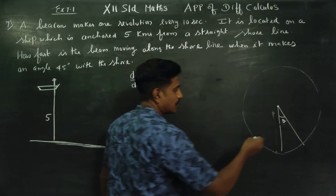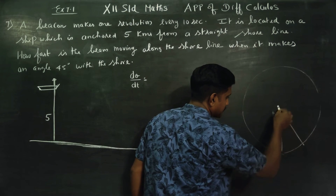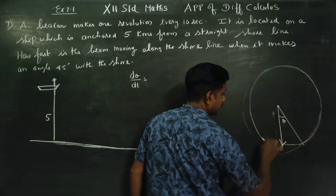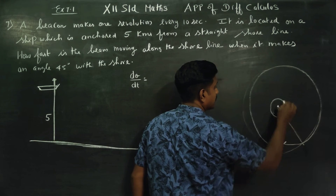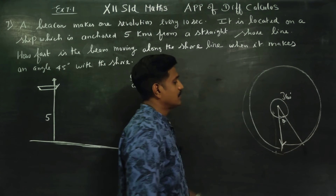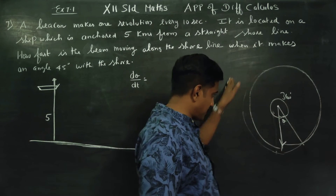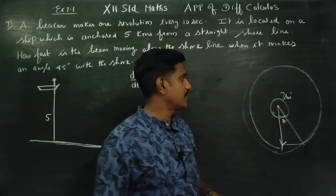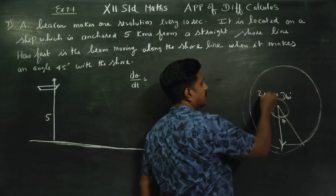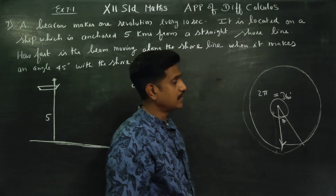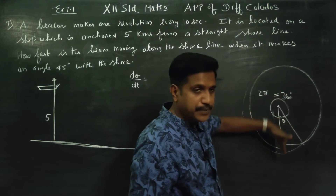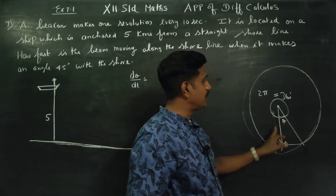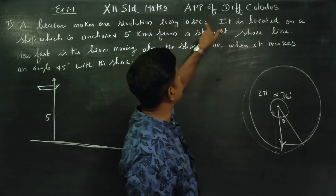If you look at the full rotation, you get 360 degrees. One revolution equals 360 degrees, which in radian measure is 2π. The beam covers an angle of 360 degrees in 10 seconds.